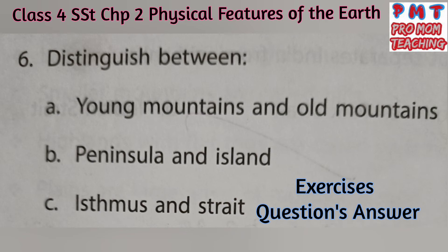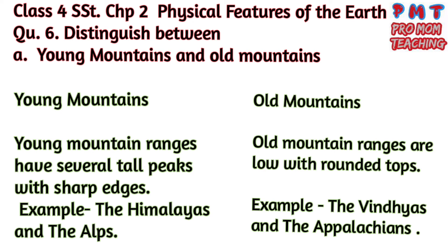Question number 6: Distinguish between young mountains and old mountains. Answer: Young mountain ranges have several tall peaks with sharp edges — for example, the Himalayas and the Alps. Old mountain ranges are low with rounded tops — for example, the Vindhyas and the Appalachians.